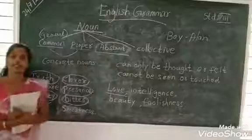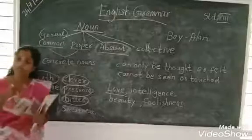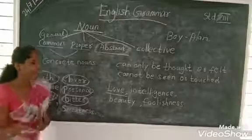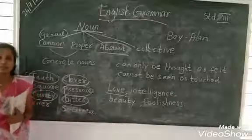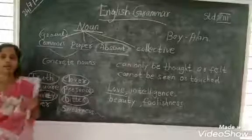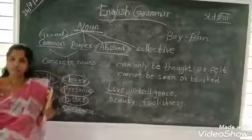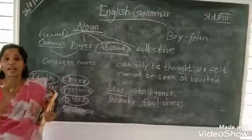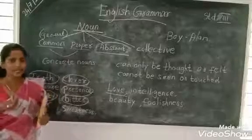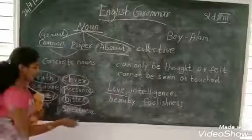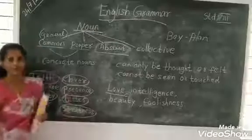Sweetness. What does sweetness mean? Sweetness is something you feel or experience — you cannot see or touch it. So sweetness is also an abstract noun.